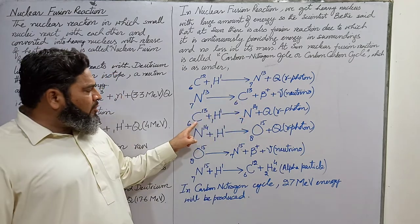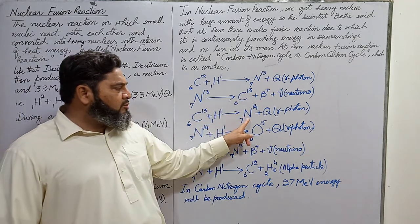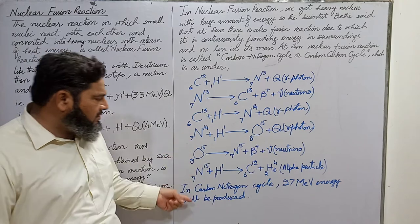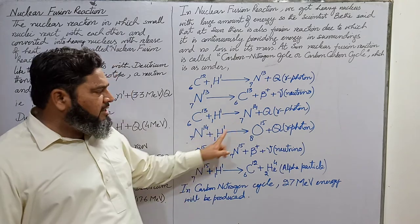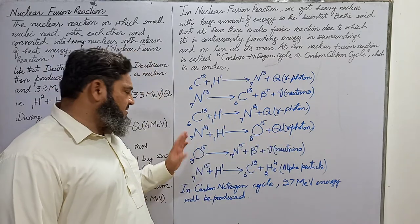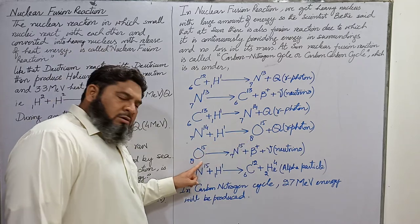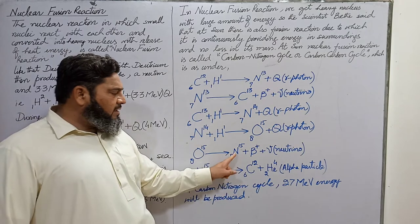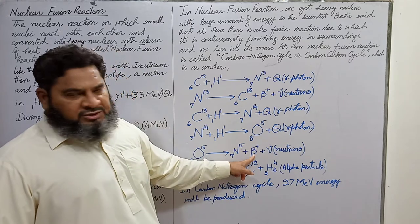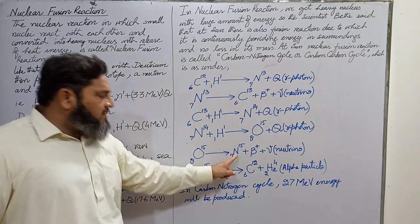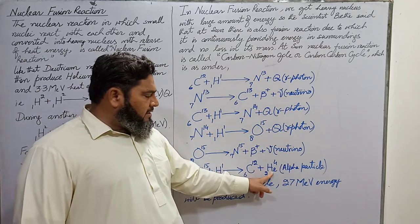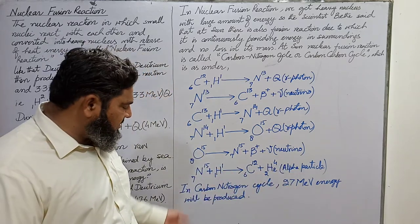In step three, the isotope of carbon reacts with ordinary hydrogen to produce nitrogen, and again heat energy is released in the form of a gamma photon. In step four, this nitrogen reacts with ordinary hydrogen to produce an isotope of oxygen with release of heat energy as a gamma photon. In step five, this isotope of oxygen converts into an isotope of nitrogen, a positron, and a neutrino. In step six, this isotope of nitrogen reacts with hydrogen to produce carbon and helium — that is, an alpha particle, a helium nucleus.